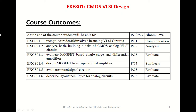Course outcome four is: student will be able to design MOSFET-based operational amplifiers. It has been mapped to program outcome three, and the Bloom's level expected is synthesis. Course outcome five is: student will be able to evaluate mixing circuits. It has been mapped to program outcome three, and the Bloom's level expected is evaluation. Course outcome six is: student will be able to describe layout techniques for analog circuits. It has been mapped to program outcome three, which is again evaluation.